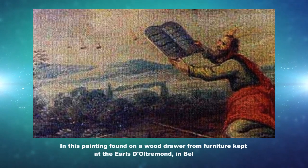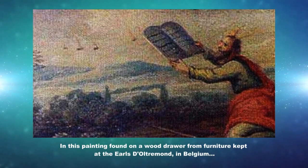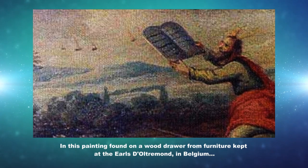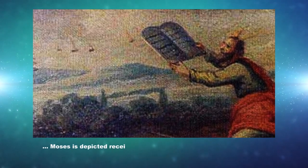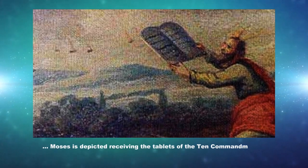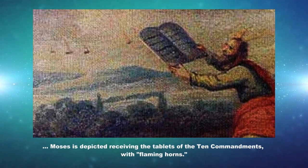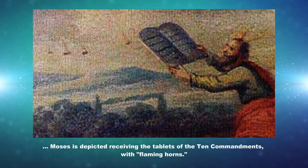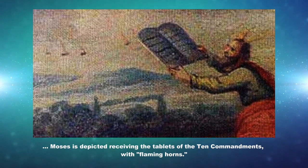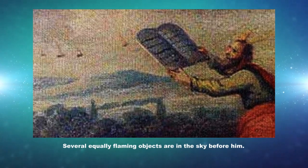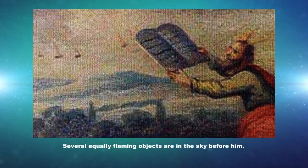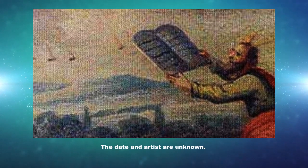Moses and the Tablets: in this painting found on a wood drawer from furniture kept at the Earls d'Oltremont in Belgium, Moses is depicted receiving the tablets of the Ten Commandments with flaming horns. Several equally flaming objects are in the sky before him. The date and artist are unknown.